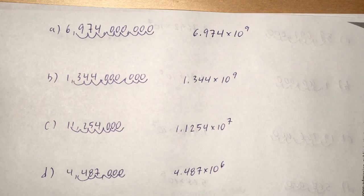So 11,254,000 converts to 1.1254 times 10 to the 7th.